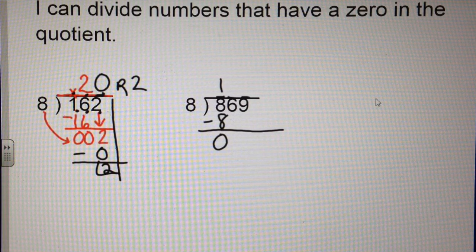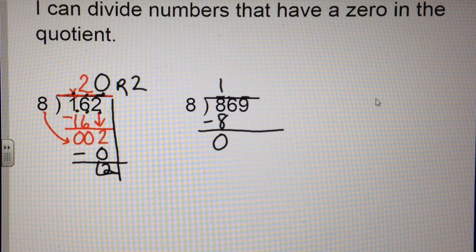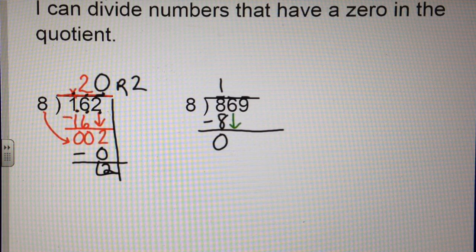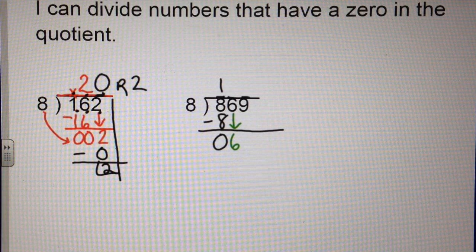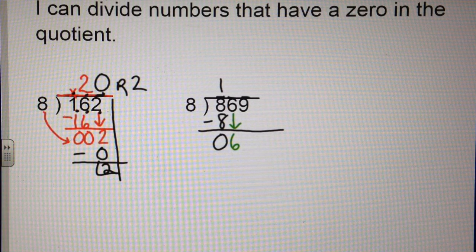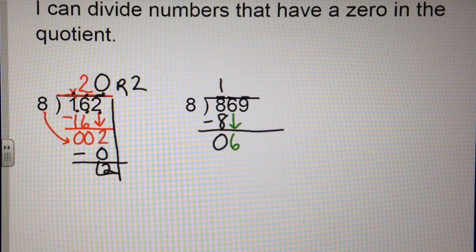My next thing I need to do is bring down 1 digit, which is the 6. I check to see how many times 8 goes into 6. 8 does not go into 6.